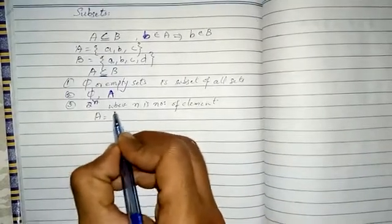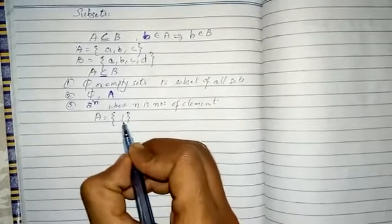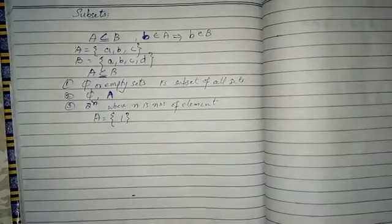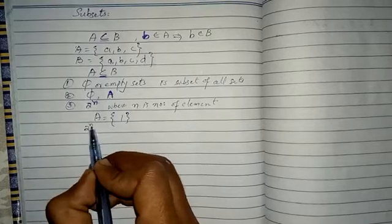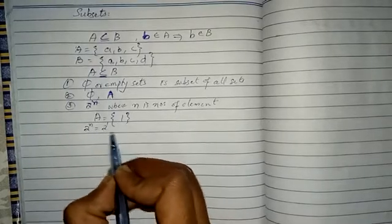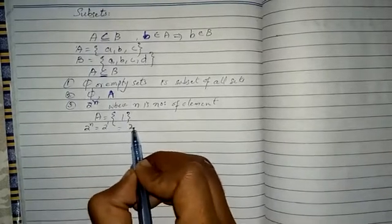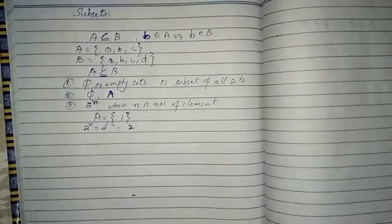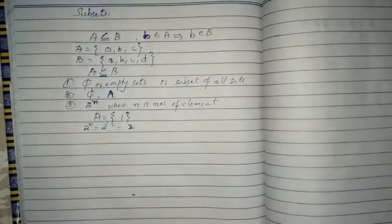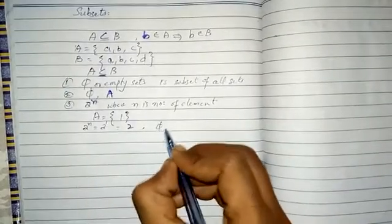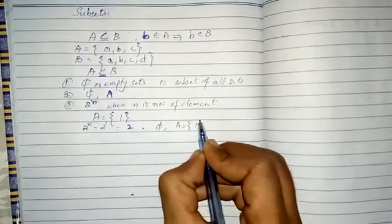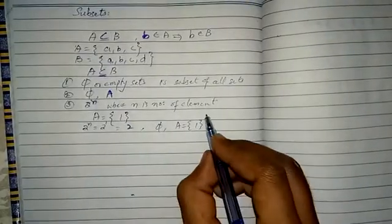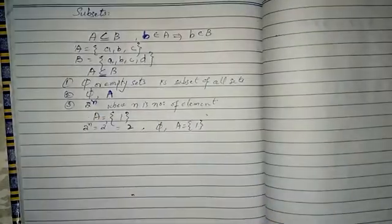For example, if set A has only one element, we apply 2^n where n=1, giving us 2. So set A must have two subsets, which are phi (φ) and A itself — {1}. Both of these are subsets of A.